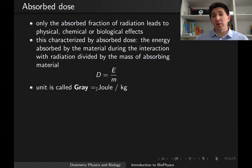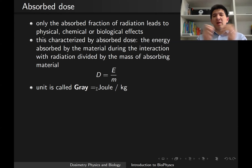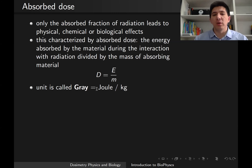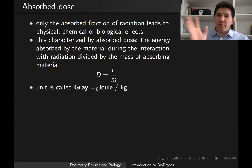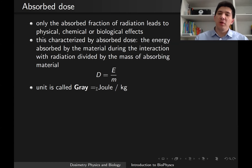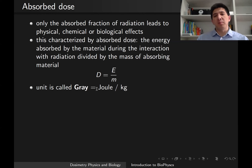We call this the absorbed dose, which is a conceptual idea that doesn't give you real intuition for how we measure it in practice. The unit of radiation dose is called the gray, which is joules per kilogram of mass.